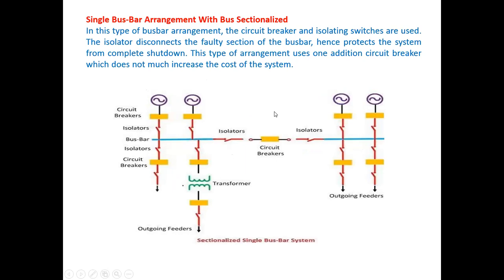Another modification is the single bus bar arrangement with bus sectionalizing switches. In this modified version of the single bus bar scheme, two single bus bar sections are connected with a circuit breaker and sectionalizing switches. Circuit breakers and isolating switches are used. The isolator disconnects the faulty section of the bus bar, thereby protecting the system from a complete shutdown if any fault occurs.